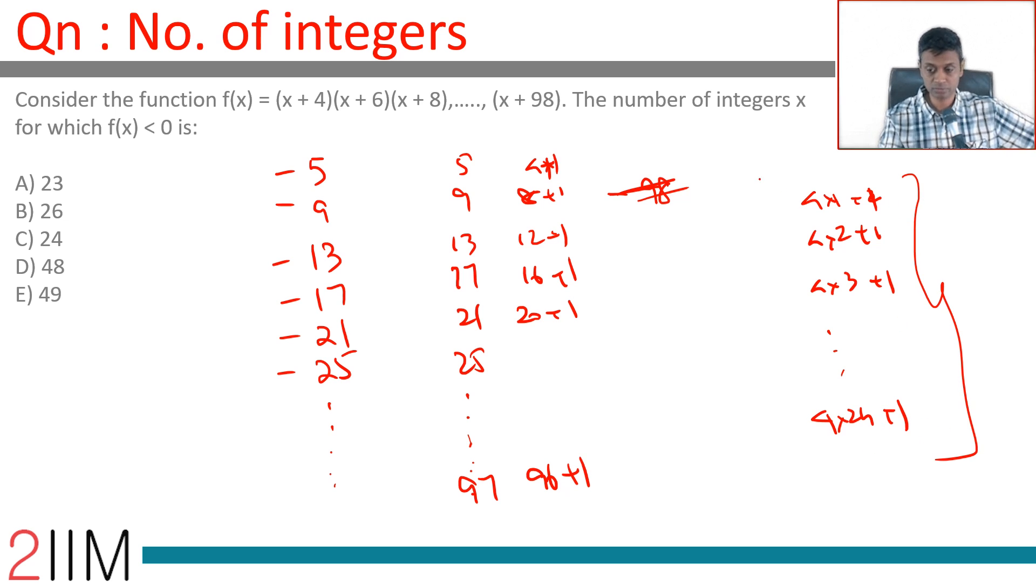All of these values, minus of this obviously, x can take. So there are 24 different values x can take.